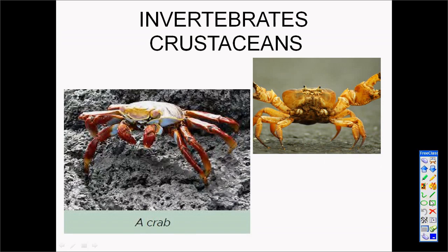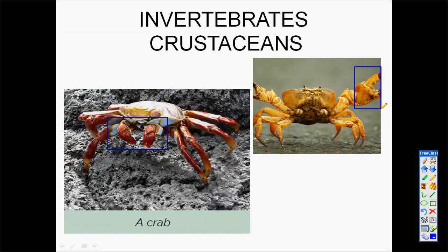Crabs are divided into two pieces. They have a cephalothorax and also an abdomen. Their hard shell on the outside is tough. They are part of the family of lobsters, shrimps, prawns, and mussels. Crabs have ten legs and the front legs are the pincers.